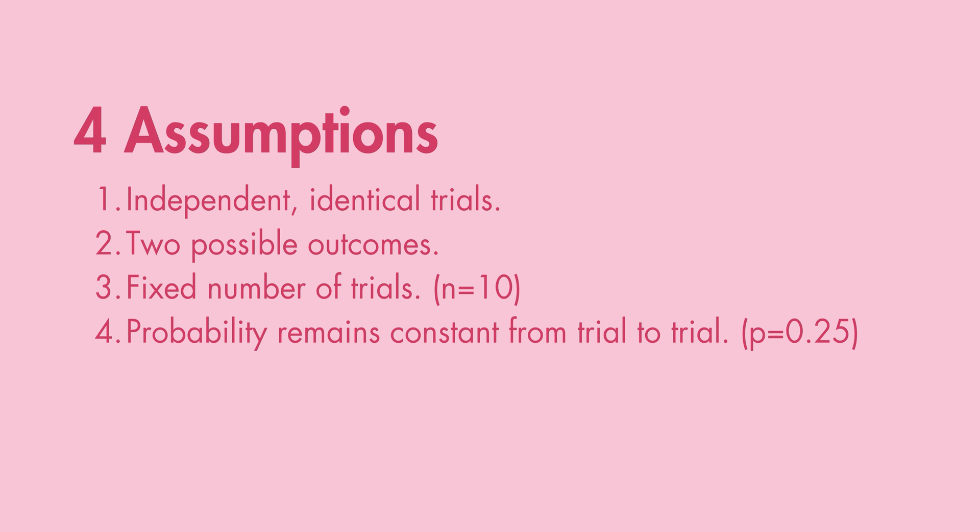Number four: the probability of a certain outcome, such as success, is denoted by p. This remains constant for each trial. We'll give you the benefit of the doubt this time, Arthur, and say that your probability of successful RIS is 0.25. Important notice: binomial distribution can only help you calculate the probability of one outcome. So, to find the probability of failure, let's call this q, is 1 minus the probability of success, which equals 0.75. This works because there are only two possible outcomes, meaning that q plus p must add up to 1.